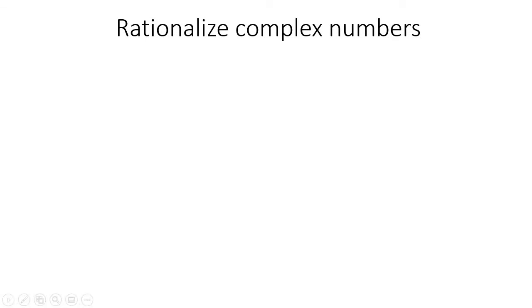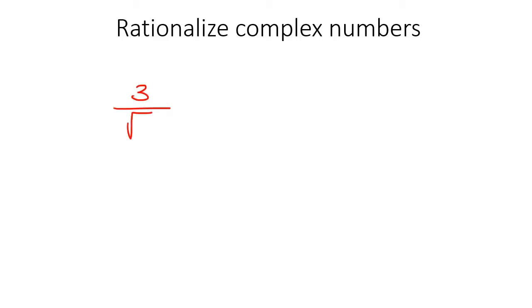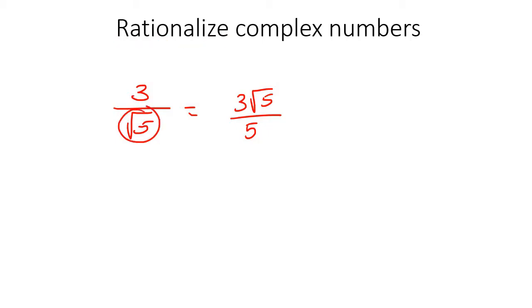In this lesson, we're going to learn how to rationalize complex numbers. What does that even mean? Well, I want you to try something interesting. On your calculator, just type in 3 over square root 5. What it does is it's doing a process called rationalizing the denominator. What it means is that in the denominator, it doesn't want us to have any irrational numbers, so it rationalizes the denominator.